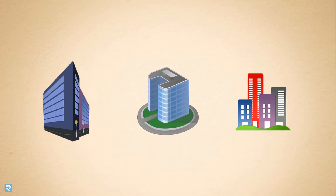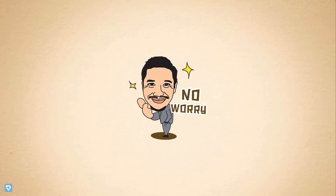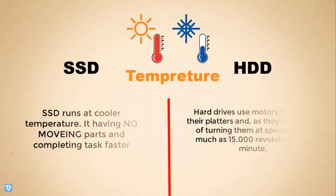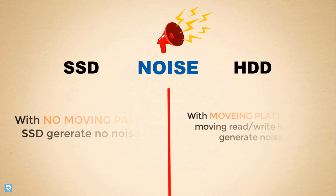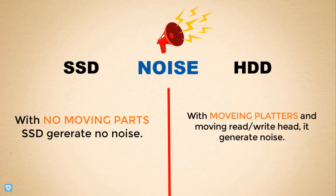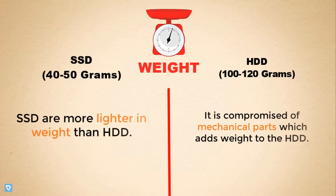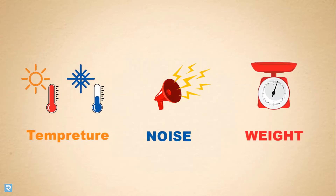Another difference is about temperature — SSD hosting has a slightly higher temperature versus HDD. When we talk about noise, SSD has no noise, whereas in HDD, due to moving parts, it creates or generates noise. When we talk about weight, SSD is lighter than HDD. Temperature, noise, and weight — all three might affect the performance of your server.